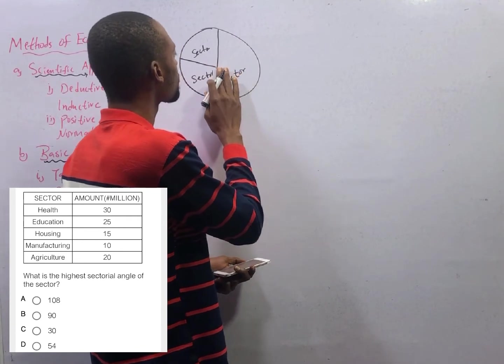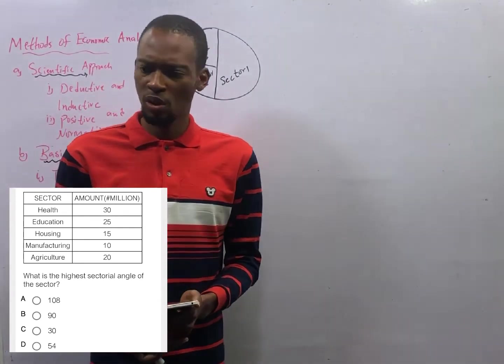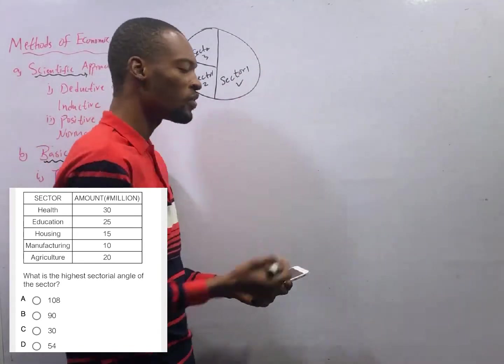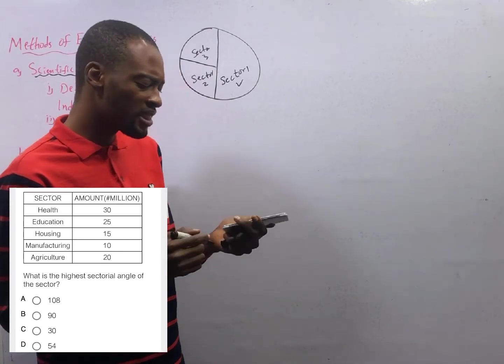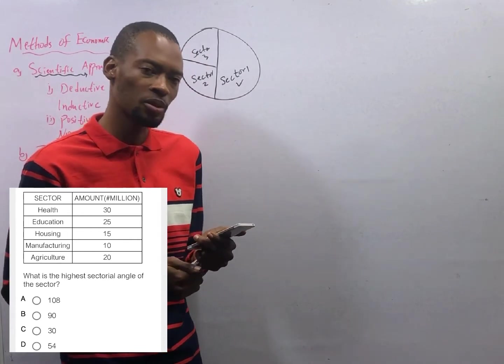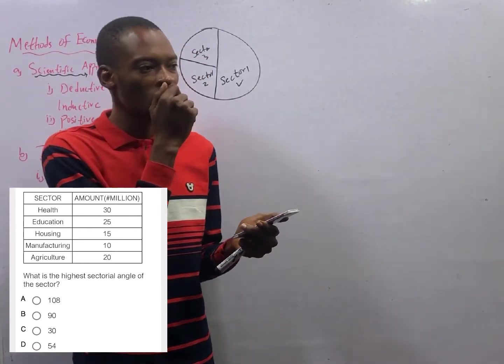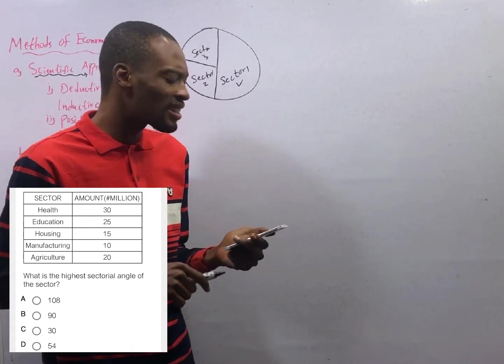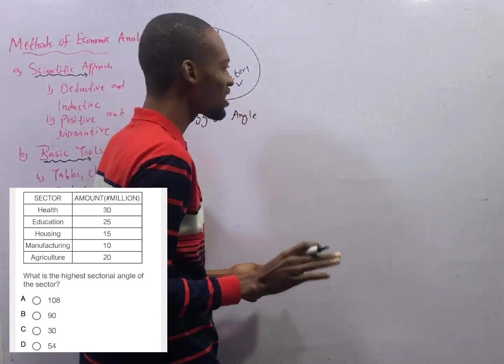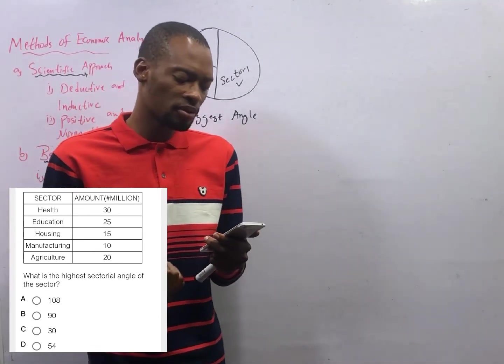If you have something like this - sector 1, sector 2, sector 3 - by inspection, which do you think is the biggest or the largest sector? Sector 1 obviously. Now we are using this table to answer the question below. What is the highest sectoral angle? It means from this table, get a pie chart then find the part that carries the biggest angle.